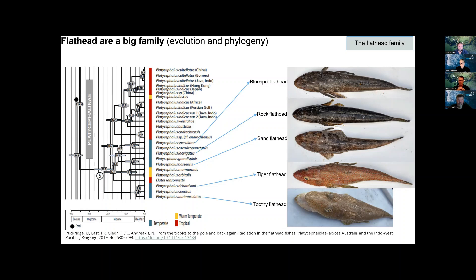The rock flathead has a very smooth, rounded head — not so dorsoventrally flattened. The sand flathead has those sandy brown spots and villiform teeth, so no really sharp canines. The top three species all share that tooth type. The tiger flathead and toothy flathead both have sharp canine teeth. The toothy flathead has a little eye flap and white spots along the top, whereas the tiger has orangey spots and lacks that eye flap — because it lives in deep water, it doesn't need sun protection.